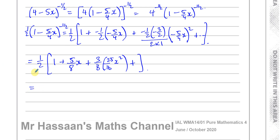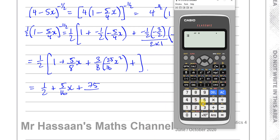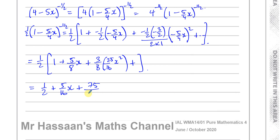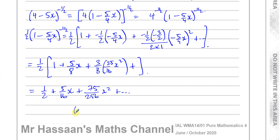Multiplying everything by 1/2: (1/2)(1) = 1/2; (1/2)(5/8)x = 5/16 x; and (1/2)(75/128)x² = 75/256 x². So (4 − 5x)^(−1/2) ≈ 1/2 + (5/16)x + (75/256)x².